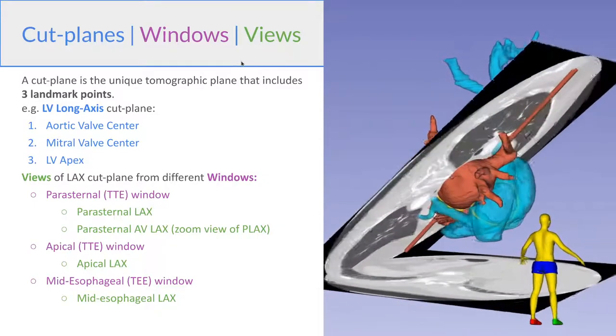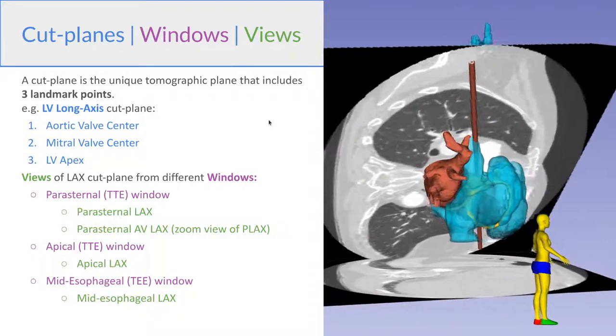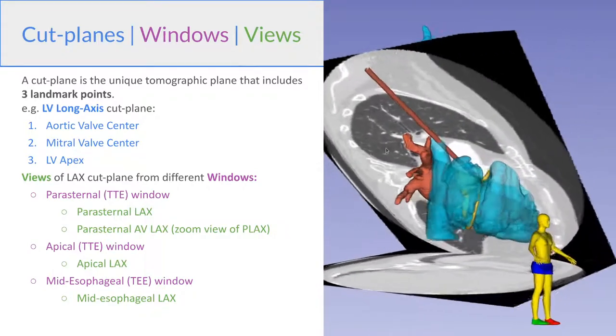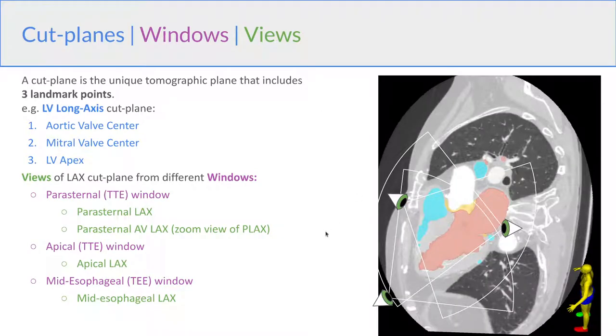So in transthoracic echo, we can use the parasternal window or the apical window. And in TE, we can use the midesophageal window. And from each of these windows, we then have specific views that include part of that cut plane. So we have the parasternal long axis, for example, or the parasternal AV long axis, or the apical long axis, or the midesophageal long axis.